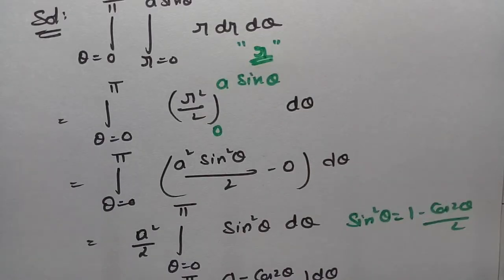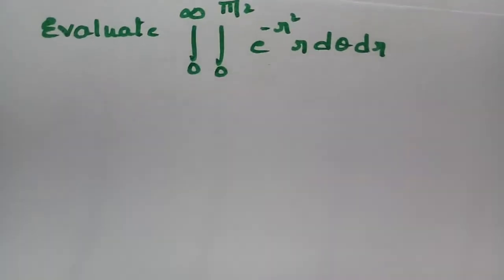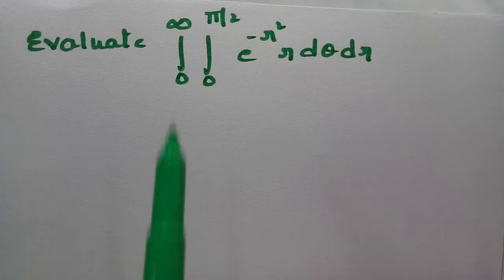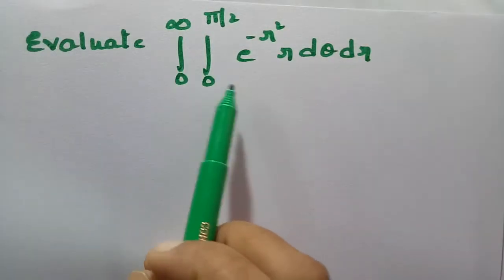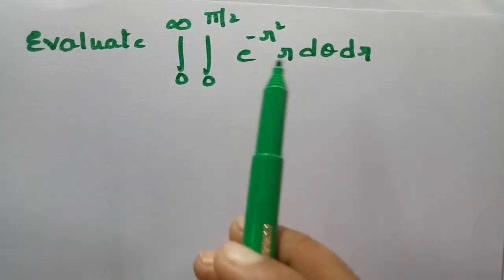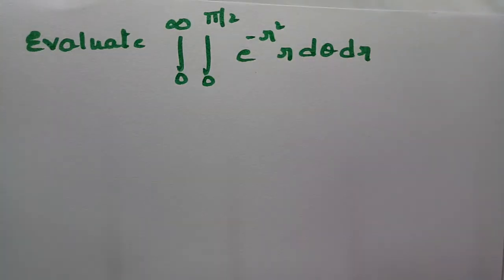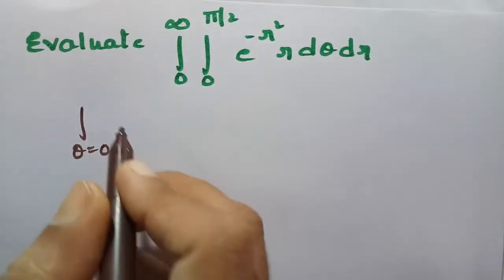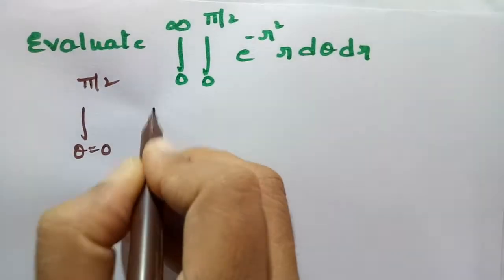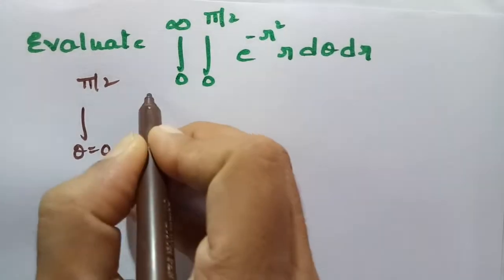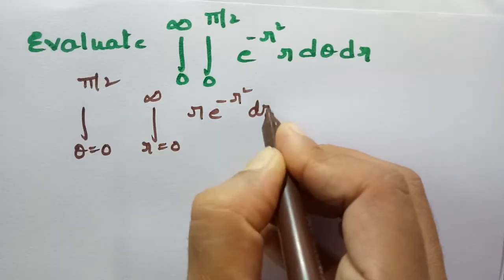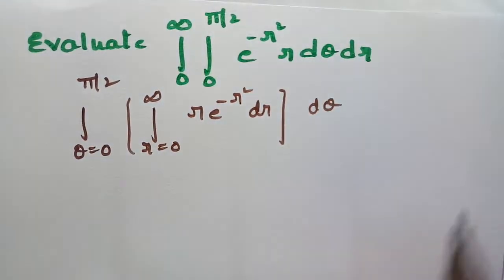The next equation here is also very important. This is the double integral in polar coordinates. We have to evaluate integral 0 to infinity, integral 0 to pi by 2, e to the power minus r squared, r dr d theta. I will split the integrals. So theta varies from 0 to pi by 2 and r varies from 0 to infinity. This is r e to the power minus r squared dr, and this will be d theta.